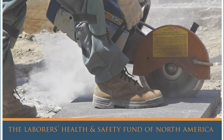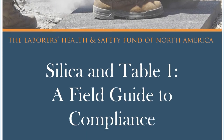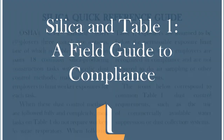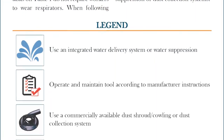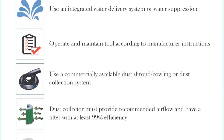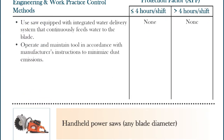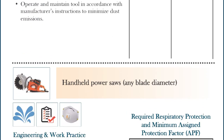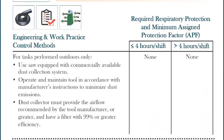Most employers choose to follow the straightforward control methods laid out in Table 1 of OSHA's silica standard. Table 1 mainly involves the use of water or local exhaust ventilation systems at the point of contact where dust is being created. These systems can significantly reduce dust exposure.